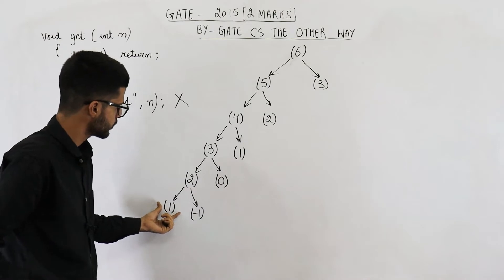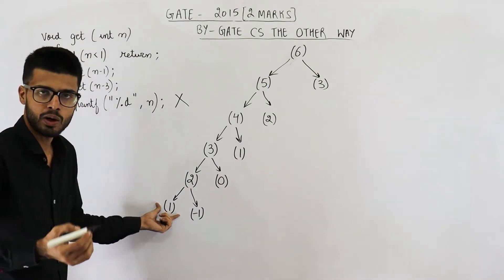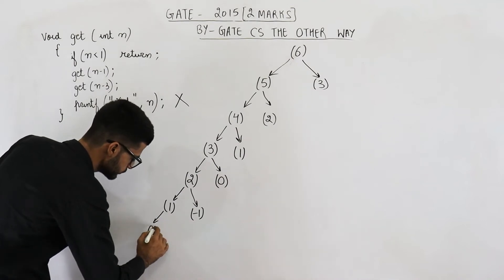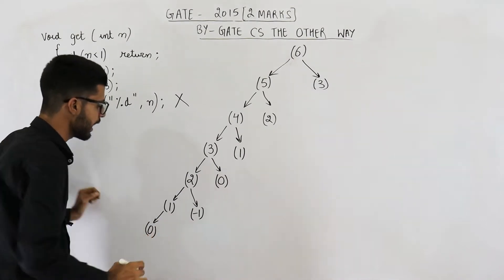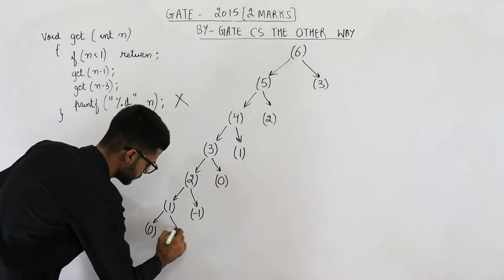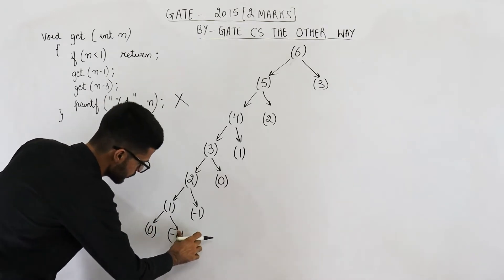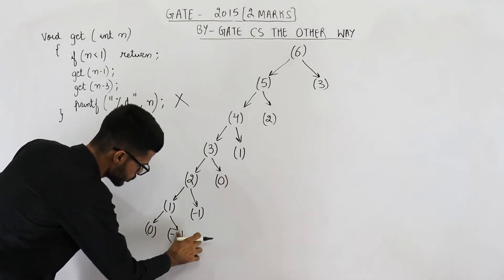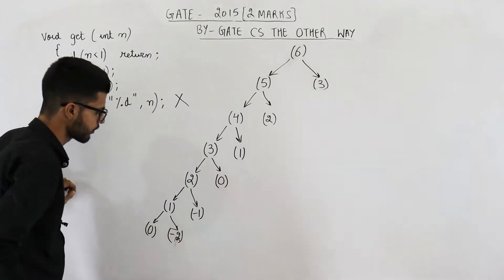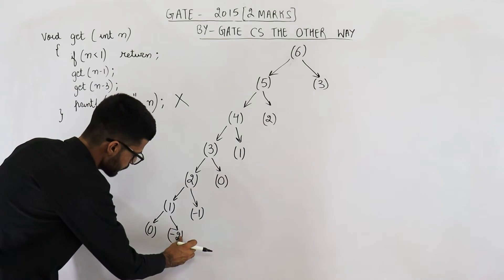So what will happen here? Get(1) will call get(1 minus 1) that is 0, and get(1 minus 3) that is minus 2. So this is minus 2.